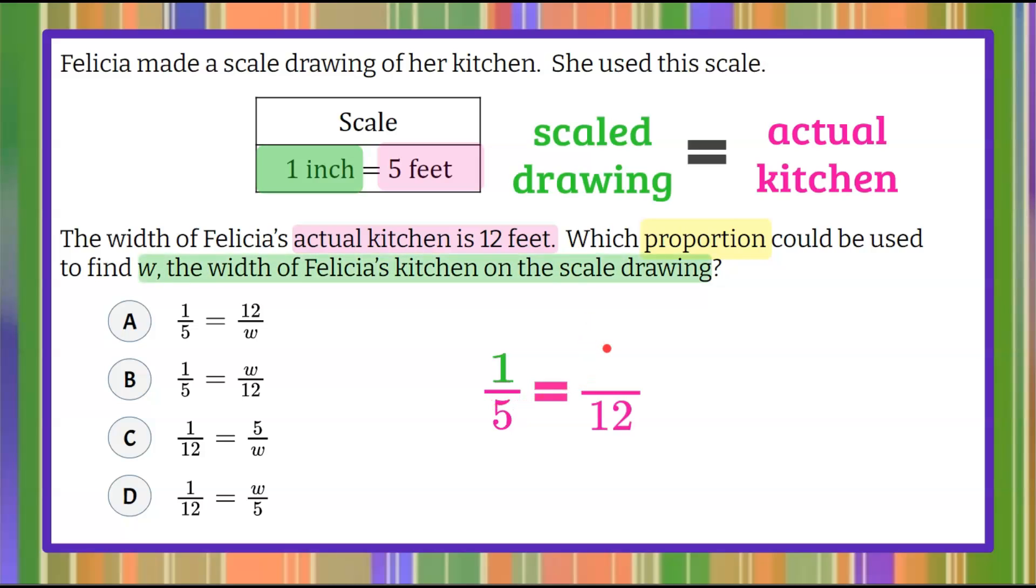Now we want to find out what W, the width of the kitchen, is on the scale drawing. So in the actual kitchen, it's 12 feet. Actual kitchen, scale drawing, we're going to put W. We don't know.